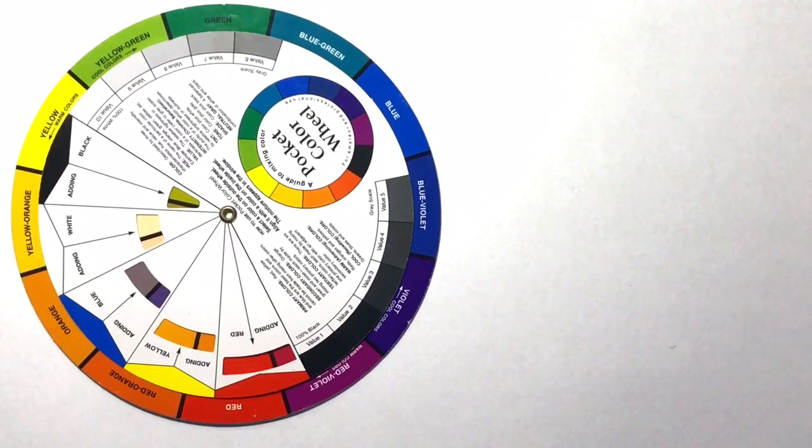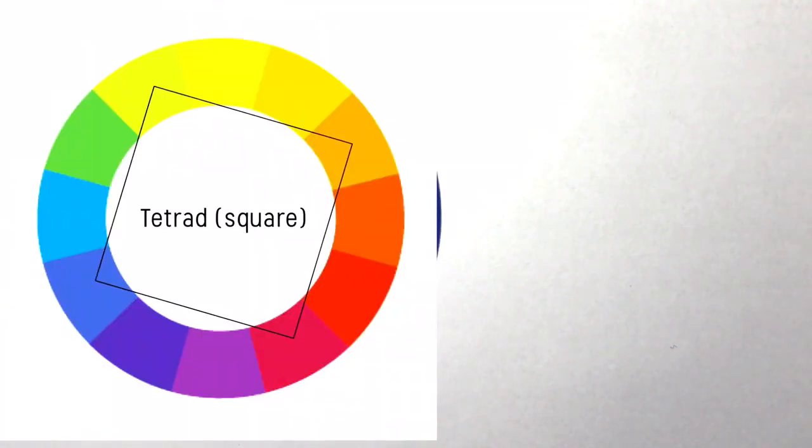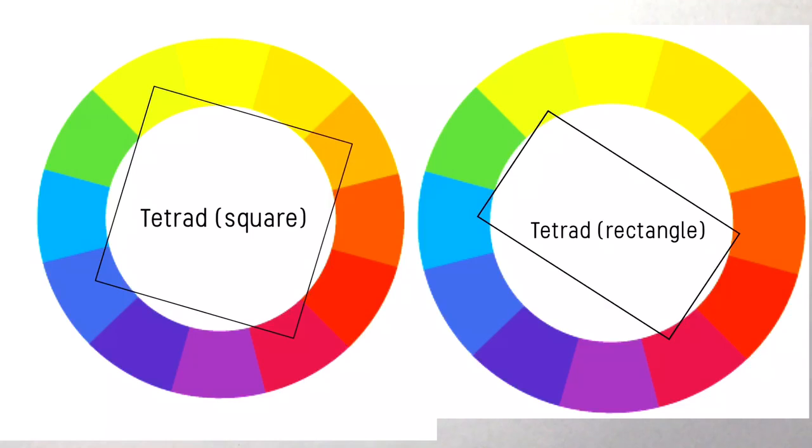There's also tetrad, which is four colors either in square formation or rectangular formation. But as this is a coloring basics video, we could pretty much go on and on connecting colors, so I'm not going to go into these too much. All you need to know is that it's a square or rectangular formation on the color wheel which gives you four well-spaced colors to put together.